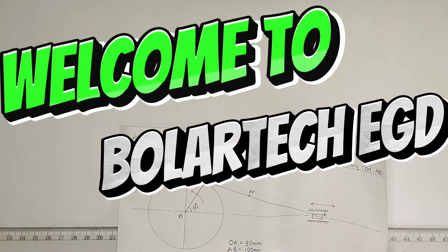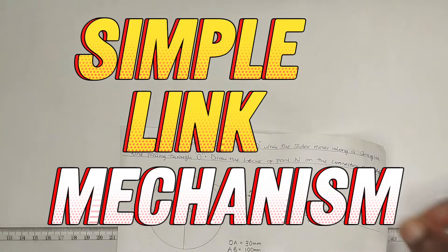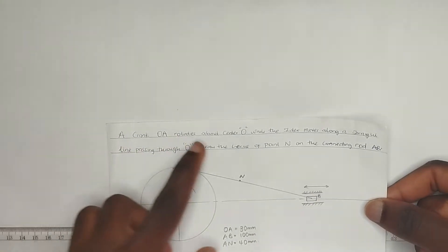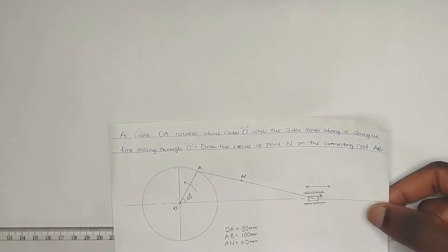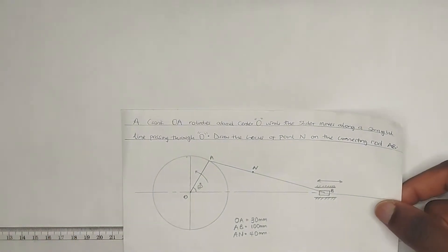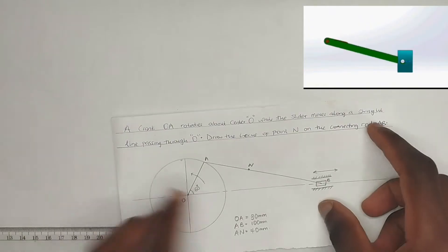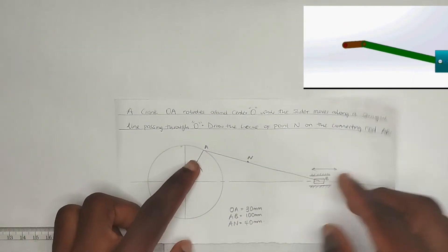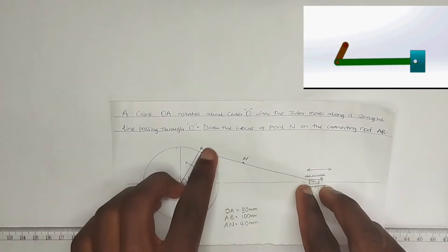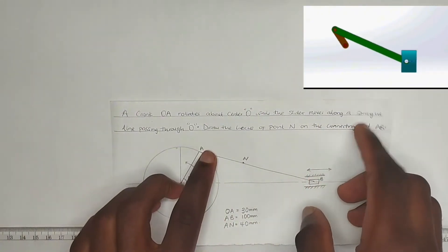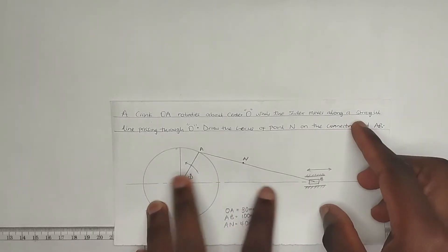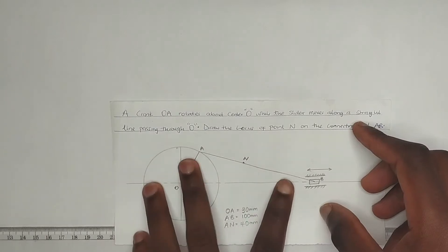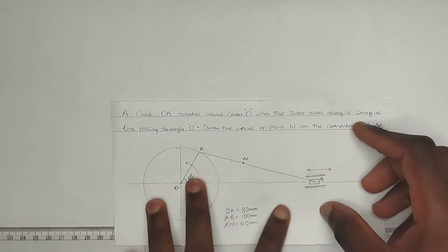Hello guys, welcome to my channel. In today's video we are going to be drawing a simple link mechanism. A simple link mechanism comprises mainly of a crank — that is OA — and also a shaft, which is also called the connecting rod. Those are the two things that a crank mechanism comprises mainly of.